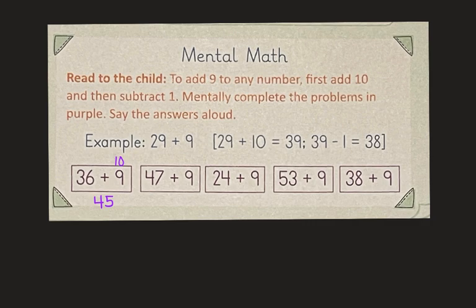Forty-seven plus nine? Well, forty-seven plus ten is fifty-seven minus one is fifty-six.